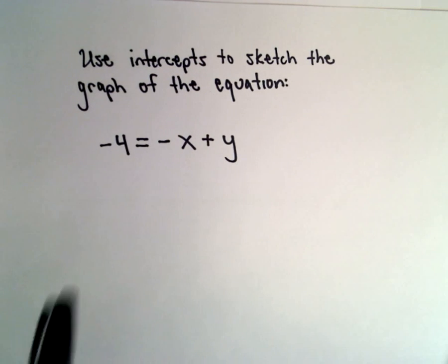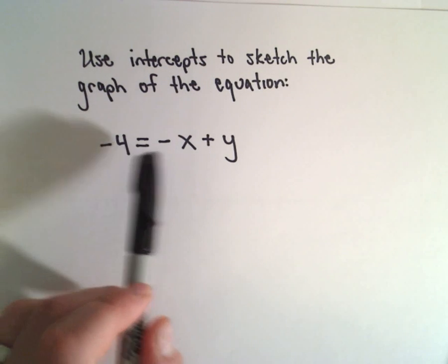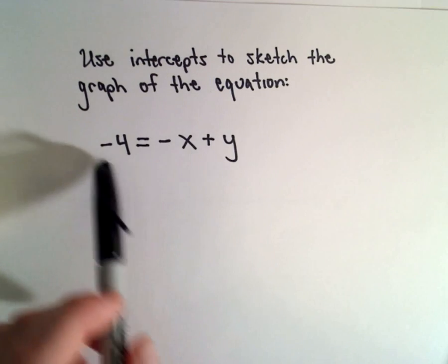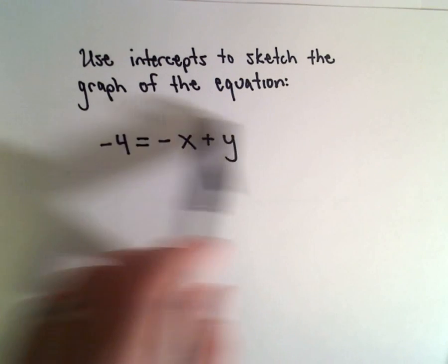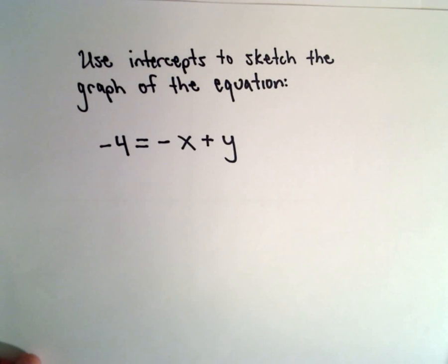Here we're going to use intercepts to sketch the graph of the equation negative 4 equals negative x plus y. So this is going to be a linear equation, so that when we graph it, it looks just like a straight line.